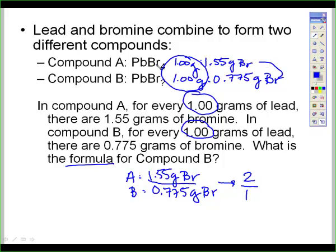In other words, there's twice as much Br in this formula as there is in this one. Well, since there's 4 here, if there's twice as much in A as there is in B, then this has to be a 2. So your answer for compound B is PbBr2. Now why did Pb not change? Well, it didn't change in this ratio, so it shouldn't change in the formula either. Simple whole number ratio.